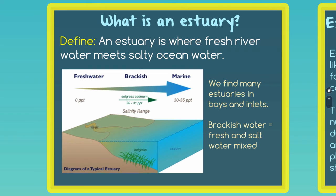Now we're going to talk about estuaries. Wetlands are bodies of land that are wet and serve as filtration for pollution and help stop erosion. Estuaries are similar to wetlands and they look very similar out in nature. An estuary is found where fresh river water meets salty ocean water. You'll find estuaries on the coastlines of the United States, usually in bays or inlets. In an estuary you're going to find brackish water, which is just a fresh and salt water mixture. Here we have a diagram of a typical estuary showing fresh water turning into brackish water and then into marine ocean water.